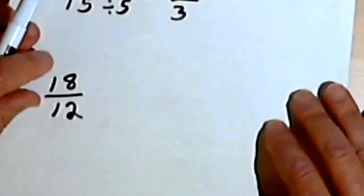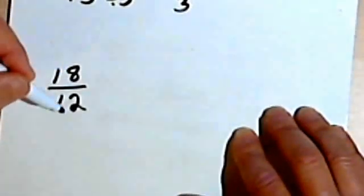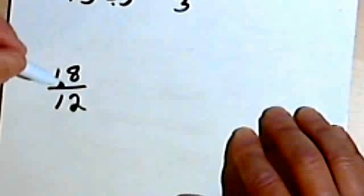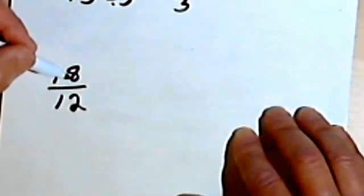Here's another one. Let's say we've got the fraction 18 over 12, and we want to reduce it. Well, I realize both 18 and 12 are even numbers, so I could divide them both by 2.